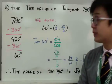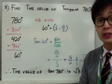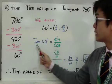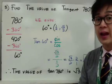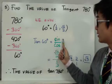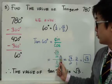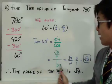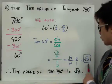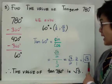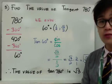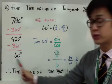At 60° in the unit circle, the coordinate is (1/2, √3/2), where 1/2 is cosine and √3/2 is sine. Tangent equals y/x, or sine over cosine. Plugging in: (√3/2) ÷ (1/2) = √3/2 × 2/1 = √3. Therefore, the value of tangent 780° equals √3, found with the help of its coterminal angle in the unit circle.